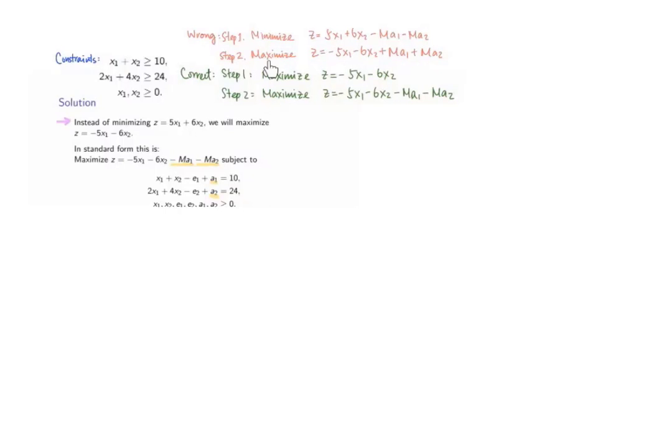Otherwise, you will get maximize z equals negative 5x1 minus 6x2 plus M times a1 plus M times a2, and this is wrong. Remember that our reasoning of having minus M times a1 minus M times a2 to the objective function of the maximization problem is to make a1 and a2 very unattractive. Since a1 and a2 are non-negative, the smallest value they can take is zero.